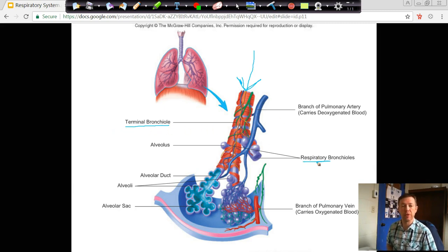After our terminal bronchioles, we reach what are known as the respiratory bronchioles. The respiratory bronchioles are actually the first place where gas exchange can occur, and the reason that gas exchange can occur is because we can see alveoli.